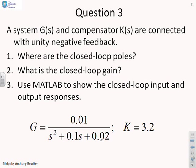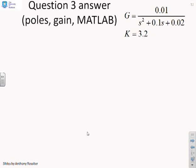Question 3. The system G and the compensator K are connected with unity negative feedback. Where are the closed loop poles? What is the closed loop gain? And use MATLAB to show the closed loop input and output responses. And here's the system that we're given. So we want poles, gain, and then use MATLAB to show the responses. So there's the system.